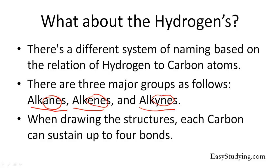When drawing the structures, each carbon can sustain up to four bonds. So if we have a carbon atom, the most it can bond with is four bonds, or sometimes we can have a double bond. Mainly, a carbon atom can have a maximum of four bonds, whether to hydrogen or to another carbon atom.